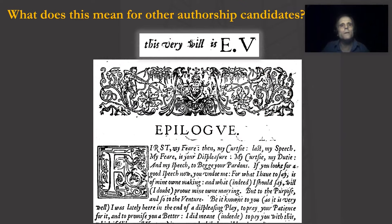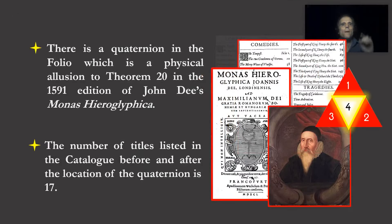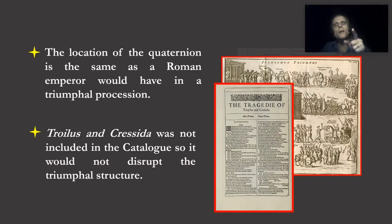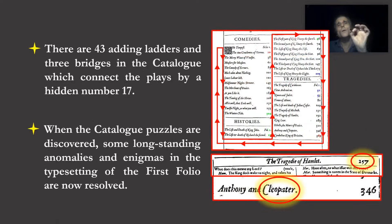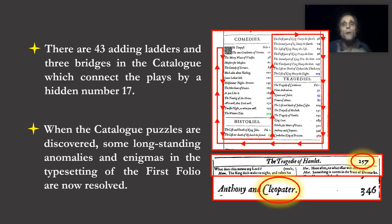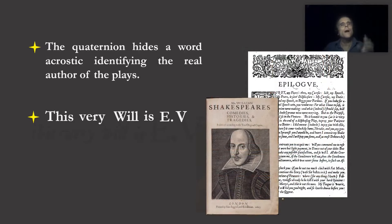Here is the question for scholars: what does this mean for other authorship candidates? Summing up the evidence: there is a quaternion in the folio, which is a physical allusion to Theorem 20 in the 1591 edition of John Dee's Monas Hieroglyphica. The number of titles listed in the catalogue of plays before and after the location of the quaternion is 17. The location of the quaternion is the same as the Roman emperor would have in a triumphal procession. Troilus and Cressida was not included in the catalogue so it would not disrupt the triumphal structure. There are 43 adding ladder clues and 3 bridge clues in the catalogue, which connect the plays by a hidden number 17. When the catalogue puzzles are discovered, some long-standing anomalies — such as Hamlet's skipped page numbers and the wrong spelling of Cleopatra — are now resolved. The quaternion hides a word acrostic identifying the real author of the plays.